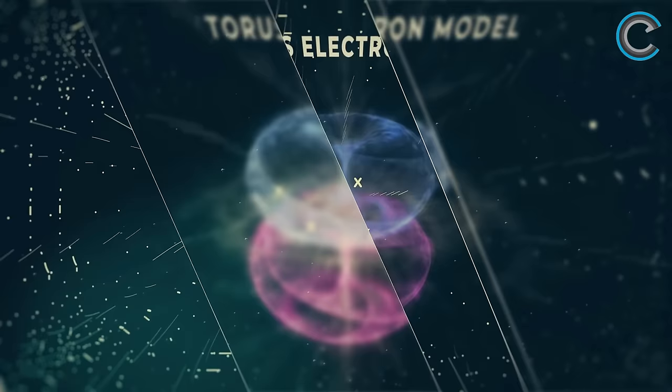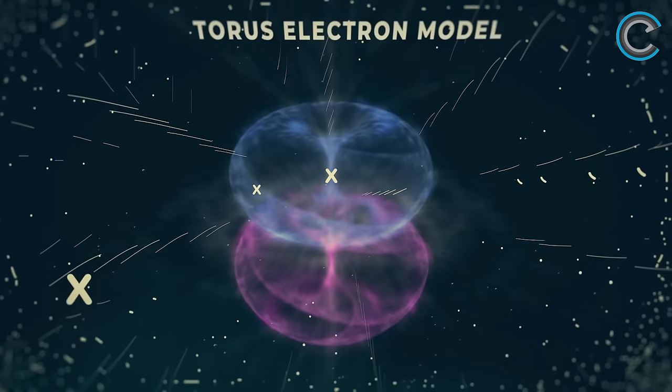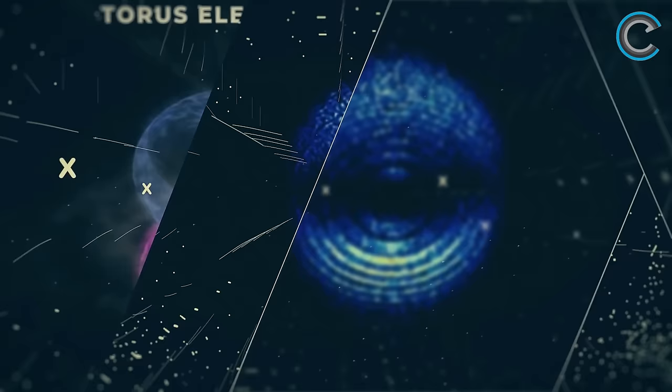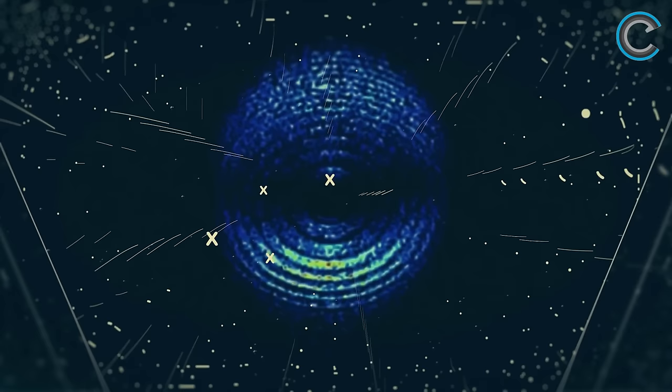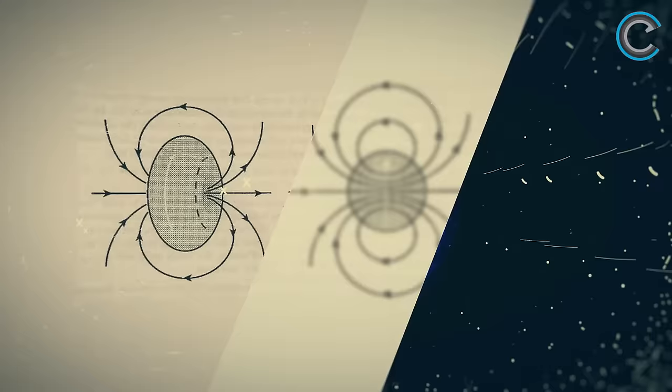This is what an electron actually looks like. It's just a resonance field. Electromagnetic models have been thrown together that are consistent with the toroidal shape of an electron. An electron is simply a coherent resonance in a toroidal field. It's not a particle. It is a resonance toroidal field.